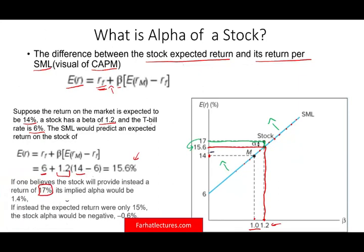So 1.2, it will be someplace here, 15 someplace here. Then we have a negative alpha of negative 0.6%. What does that mean? It means this stock will underperform the market. What should I do? I should sell the stock because it's underperforming, and buy the stock that's overperforming.